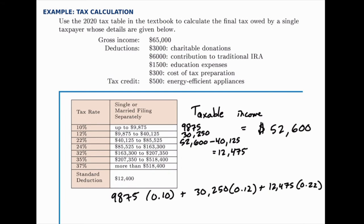And the sum of all those will be the tax owed, at least initially. So the initial tax owed is $7,362. But now we'll subtract, at the very end, the tax credit. So if we subtract $500 from this, the final tax that's owed is $6,862.